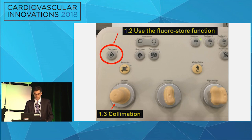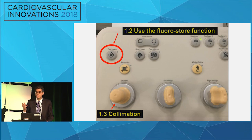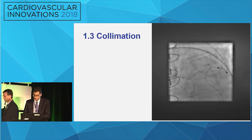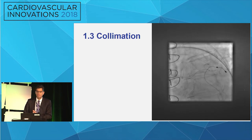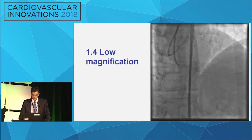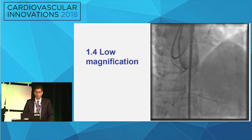There's a button you should know and use routinely several times in a case — the fluorostore button. You do a wire manipulation, save it, fluorostore button — a tenth of the radiation, one second is all you need. Collimation is also not done very commonly. You don't need to see everything — you need to see some things. If your wire tip is outside the field of view, make sure you pan from time to time so it doesn't cause a perforation. Low magnification — with big giant screens, you don't need to zoom in because the electronics do the zoom in for you.